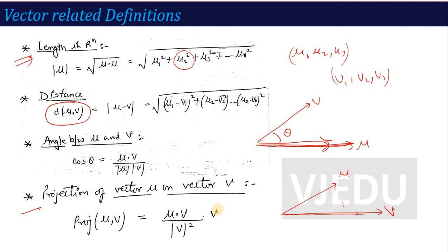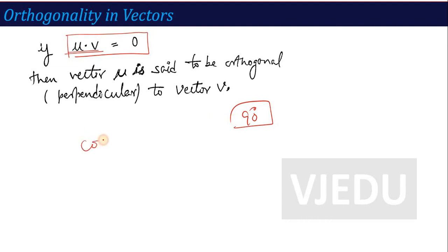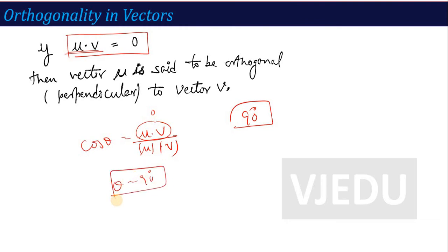Orthogonal vectors: two vectors are orthogonal when their dot product is 0. The dot product is 0 when the angle between them is exactly 90 degrees. If cosine theta = u dot v / (mod u × mod v), this becomes 0 when u dot v = 0, which corresponds to theta = 90 degrees. So two vectors that are perpendicular to each other are orthogonal — when the dot product equals 0, vector u is said to be orthogonal to vector v.